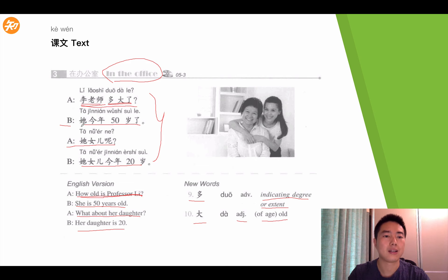Okay, let's take a quick review of this conversation. 李老师多大了? 她今年五十岁了。她女儿呢? 她女儿今年二十岁了。Okay, these are the three texts of this lesson.